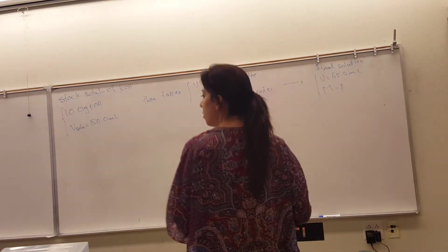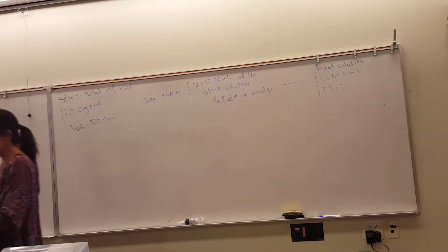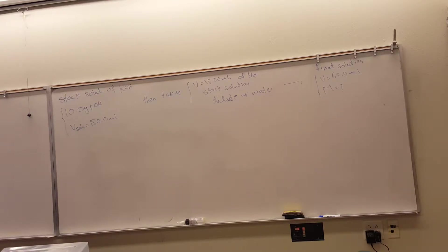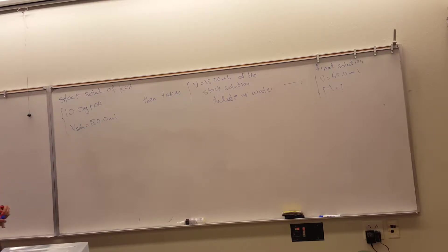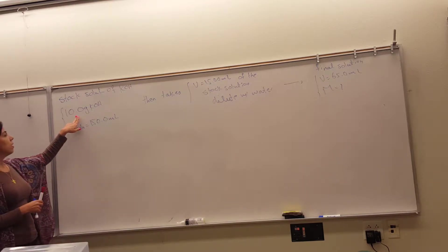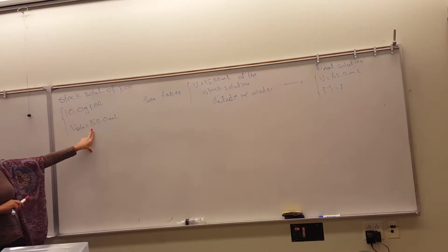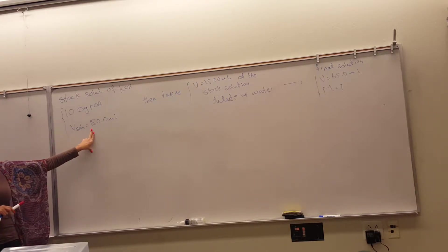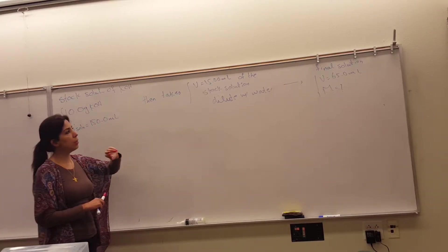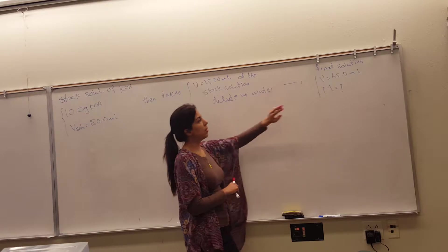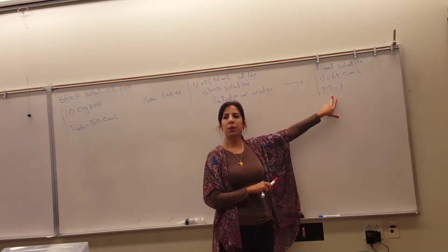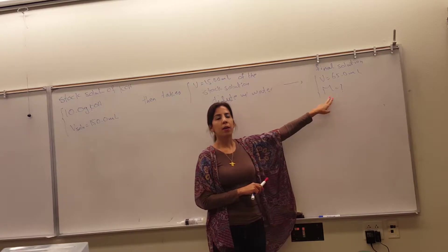This is question number seven from your master chemistry assignment. A student makes a stock solution of potassium hydroxide — gets 10 grams of potassium hydroxide, adds water to make a solution with a volume of 150 milliliters. The student then does a couple of dilutions and ends up with a 65 milliliter solution. We want to know what the molarity of the final solution is.